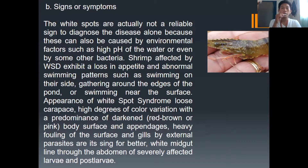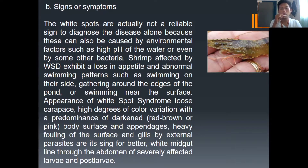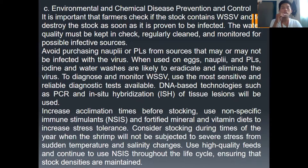Signs and symptoms: the white spots are not a reliable sign to diagnose the disease alone, as they can also be caused by environmental factors such as high pH of the water or even by some bacteria. Shrimp affected by WSSD exhibit a loss in appetite and abnormal swimming patterns such as swimming on their side, gathering around the edges of the pond, or swimming near the surface. The carapace may show high degrees of color variation with a predominance of darkened red-brown or pink body surface and appendages. It is important that farmers check if the stock contains WSSD and destroy the stock as soon as it is proven to be infected.